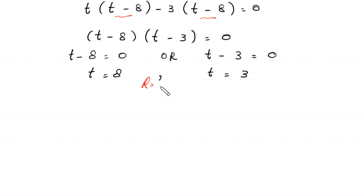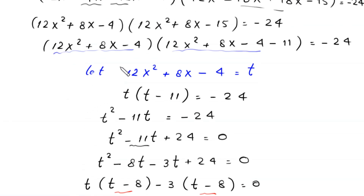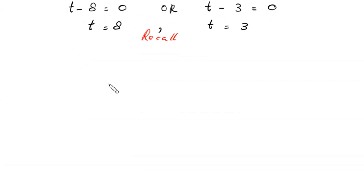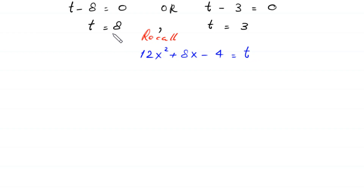Recall that we supposed 12x² + 8x - 4 = t. When t = 8, this becomes 12x² + 8x - 4 = 8.